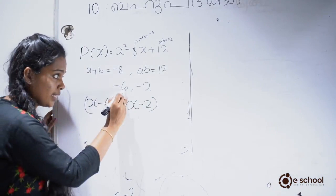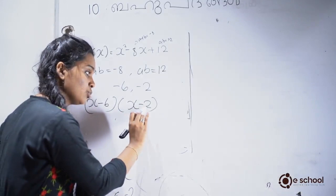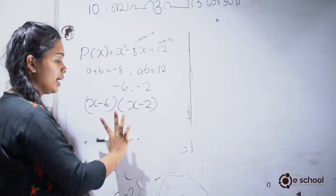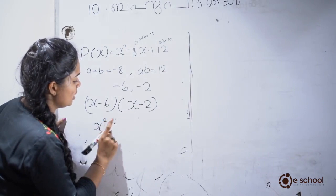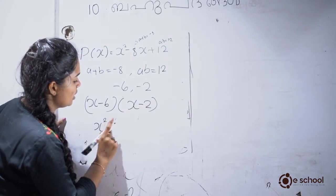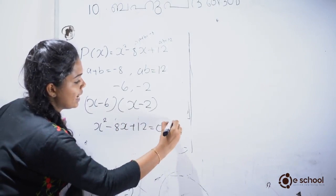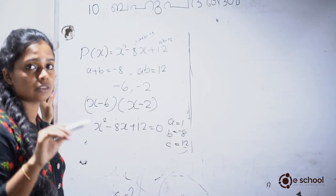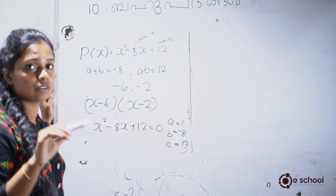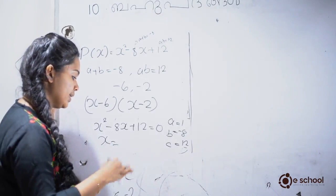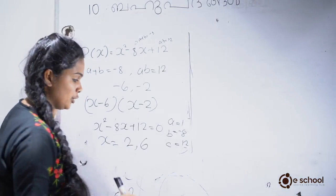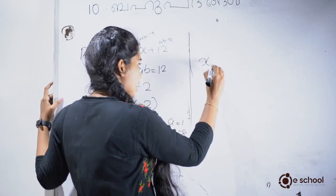If we draw x minus 6 and x minus 2, we get the factored form. We draw x squared minus 8x plus 12 equals 0, where A equals 1, B equals minus 8, C equals 12. Using the quadratic formula: x equals minus b plus or minus root of b squared minus 4ac by 2A, we get x equals 2 and x equals 6. So the factors are x minus 2 into x minus 6.